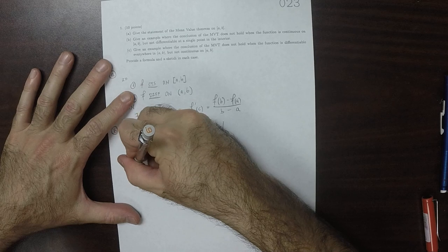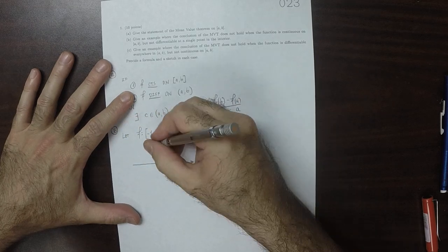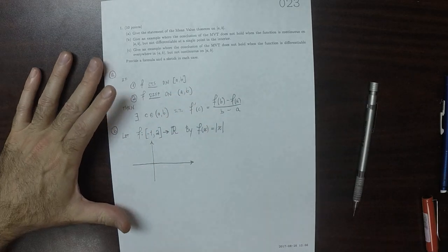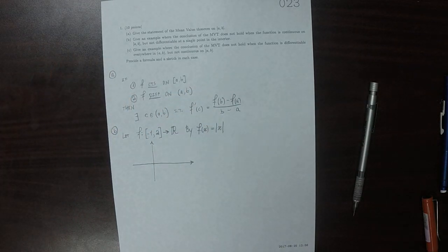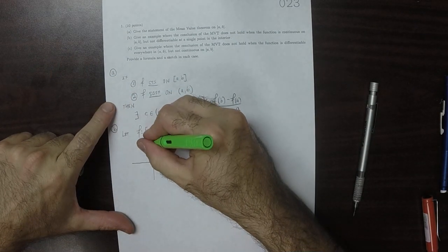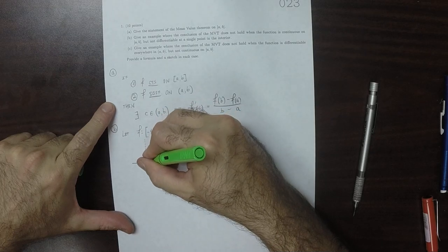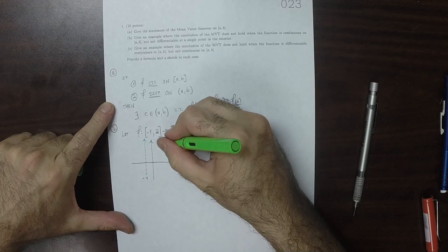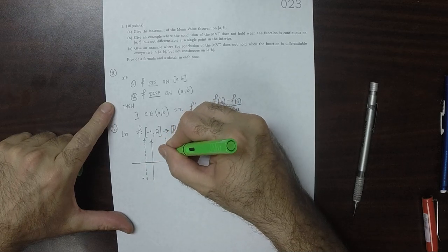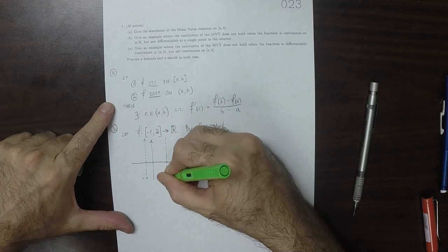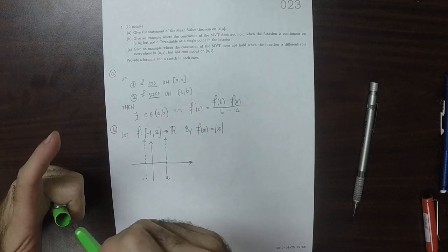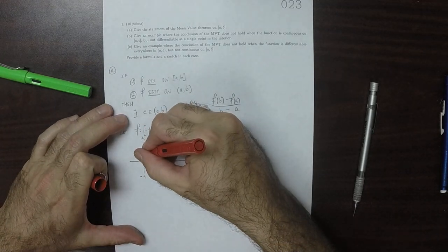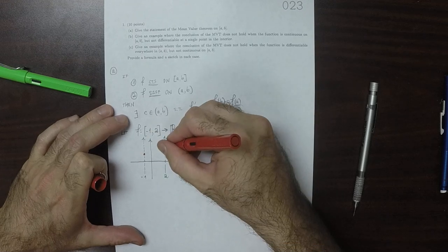So that's the formula for this. The plot looks something like this. So we're going from negative 1 to 2. So here's negative 1, and we'll go to 2.